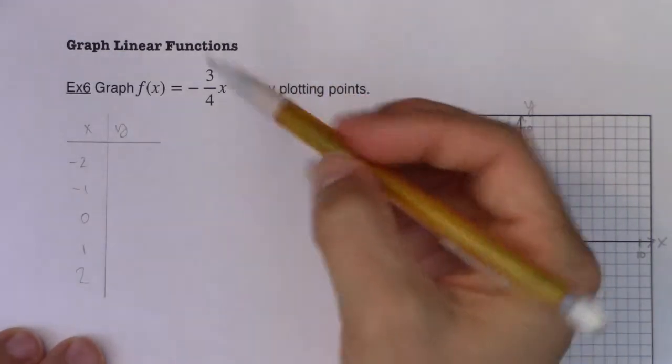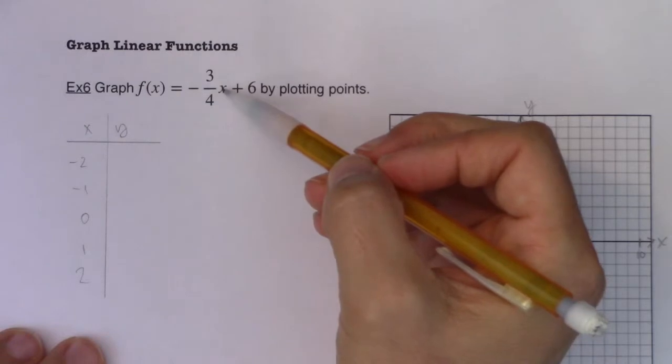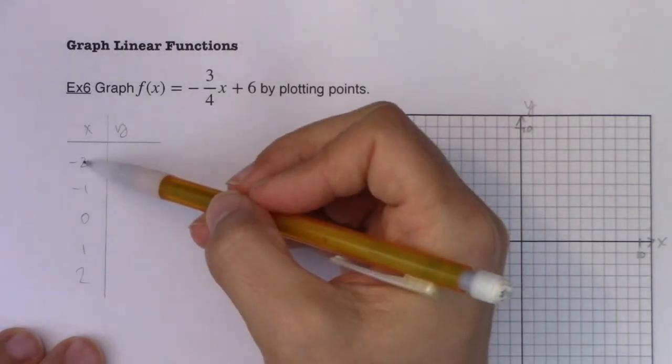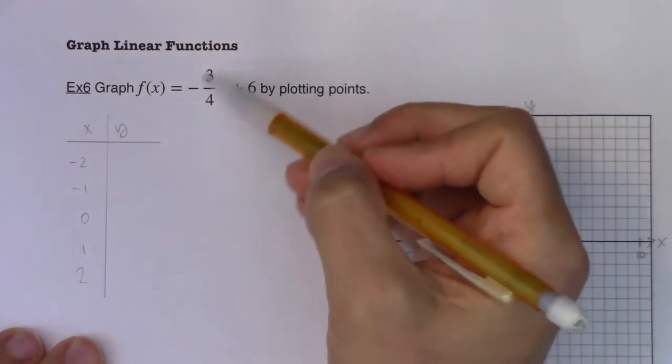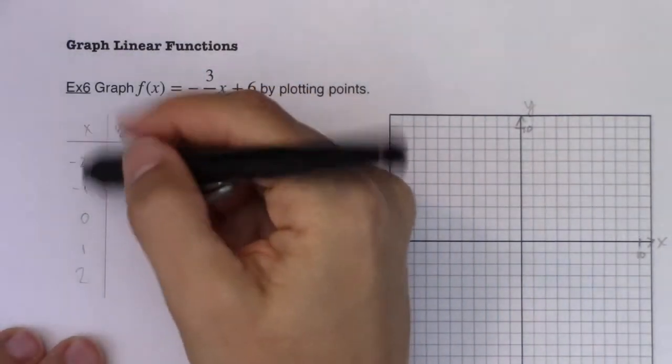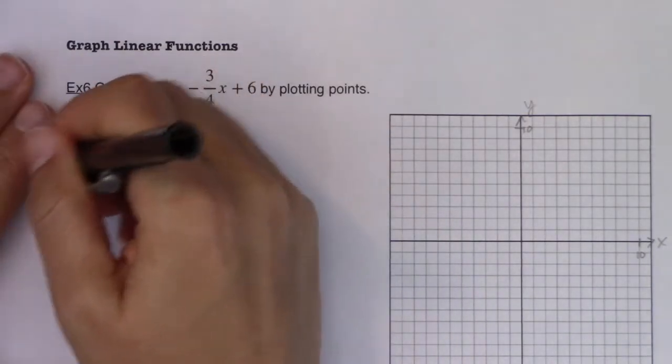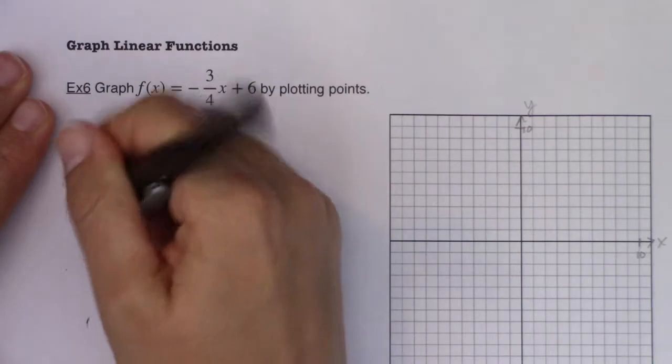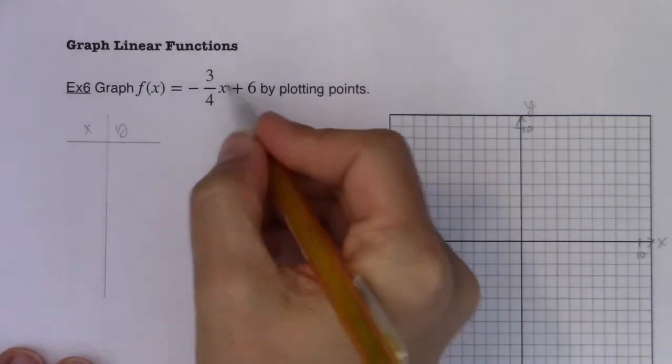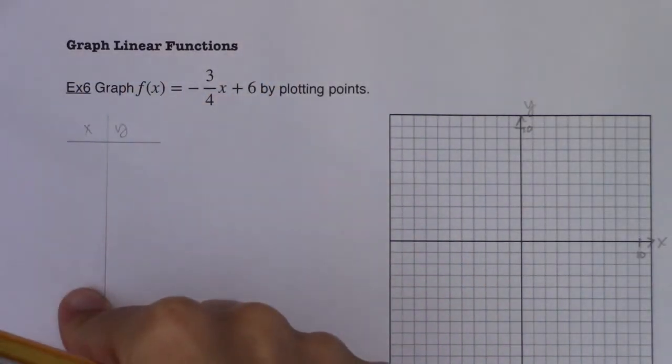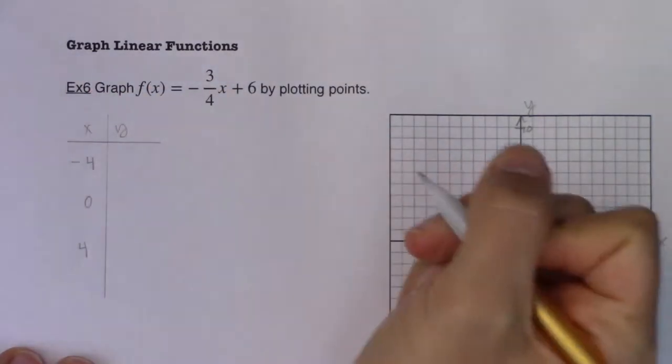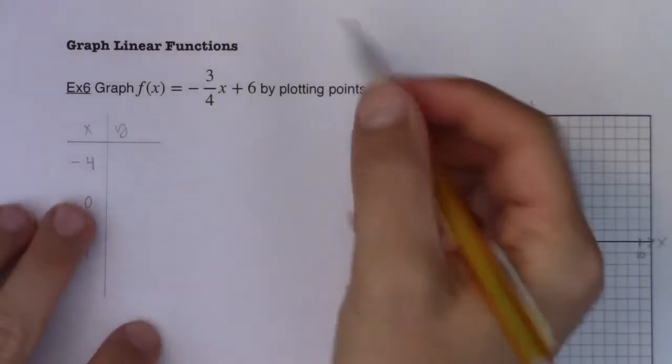We can be efficient here and look at the type of function I have. Whatever I plug in for x is going to get multiplied by negative three-fourths. If I plug negative two and negative one and one and two in there, I'm going to have fractions. If we tend to not like fractions, let's just be a little bit smarter about what x values we pick. If I know I'm ultimately going to divide that x value by four, or really multiply it by negative three-fourths, pick multiples of four so that everything works out nicely. So I'm going to pick negative four, zero and positive four.